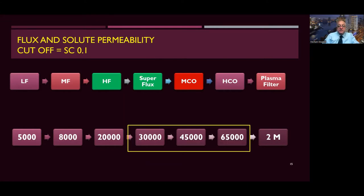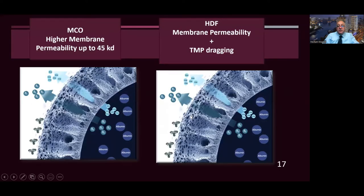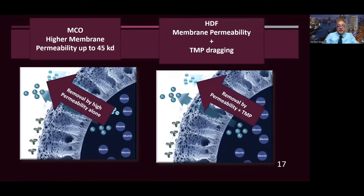We are most interested in the super flux and medium cut-off range. This is typically illustrated by the sieving coefficient curve going from low flux to high flux and medium cut-off. High cut-off approaches albumin and is not advised for routine clinical use in the dialysis population. Medium cut-off and hemodiafiltration are the cornerstones right now in dialysis, achieving permeability either directly through the membrane or via transmembrane pressure and convection forces through hemodiafiltration.